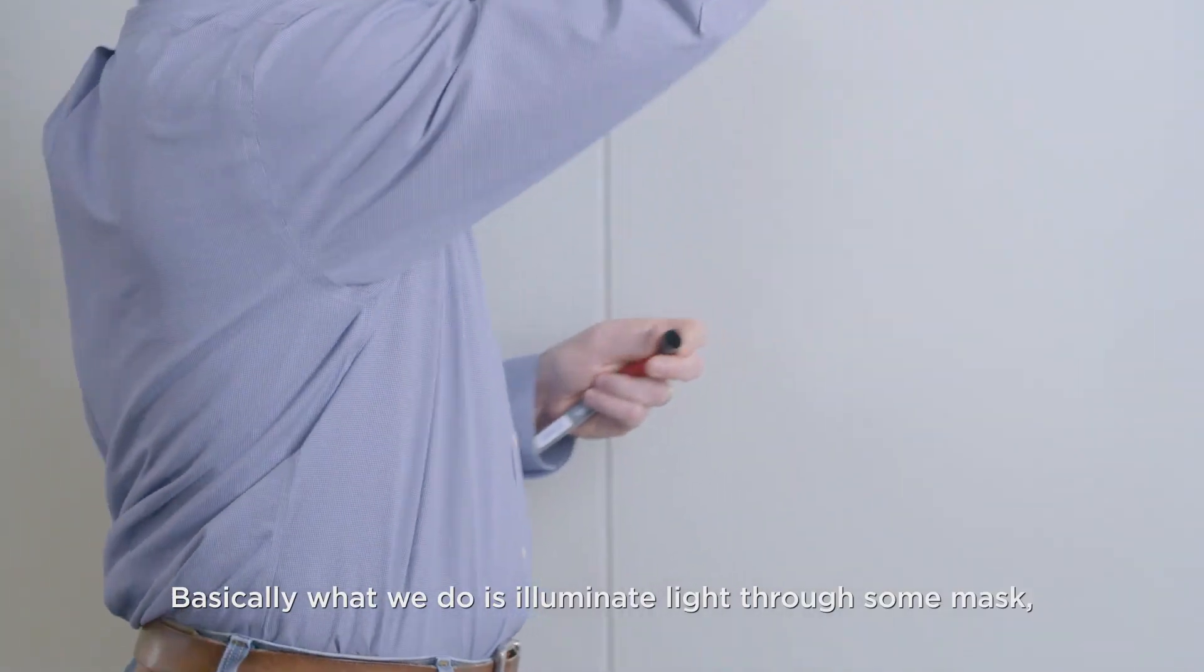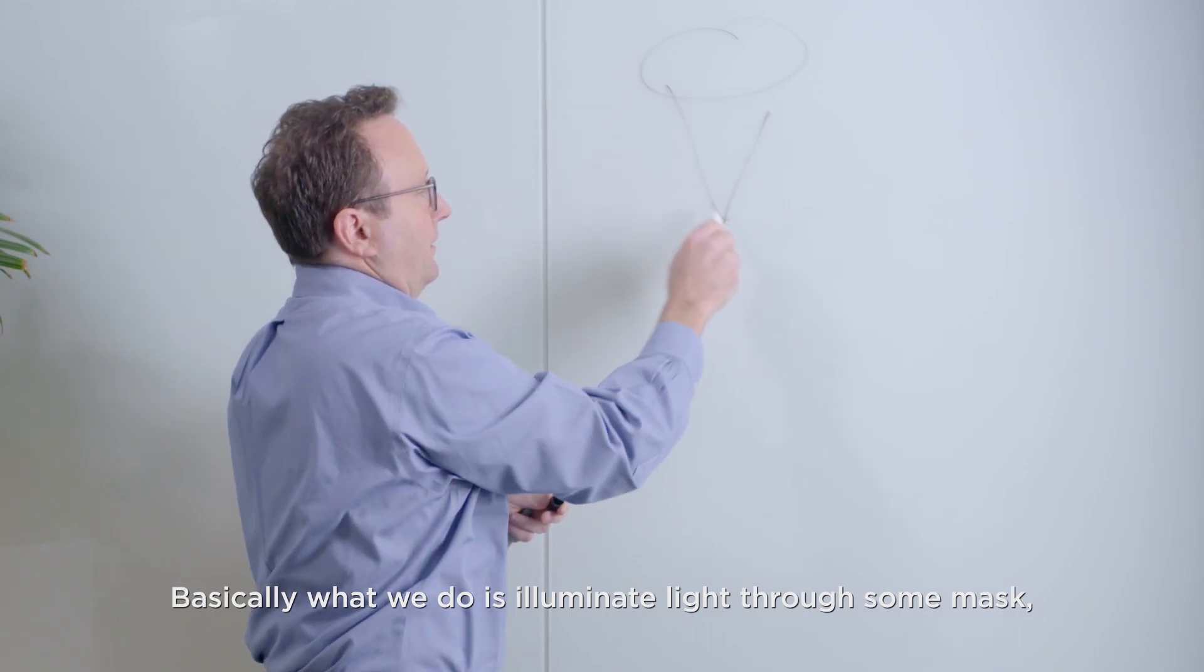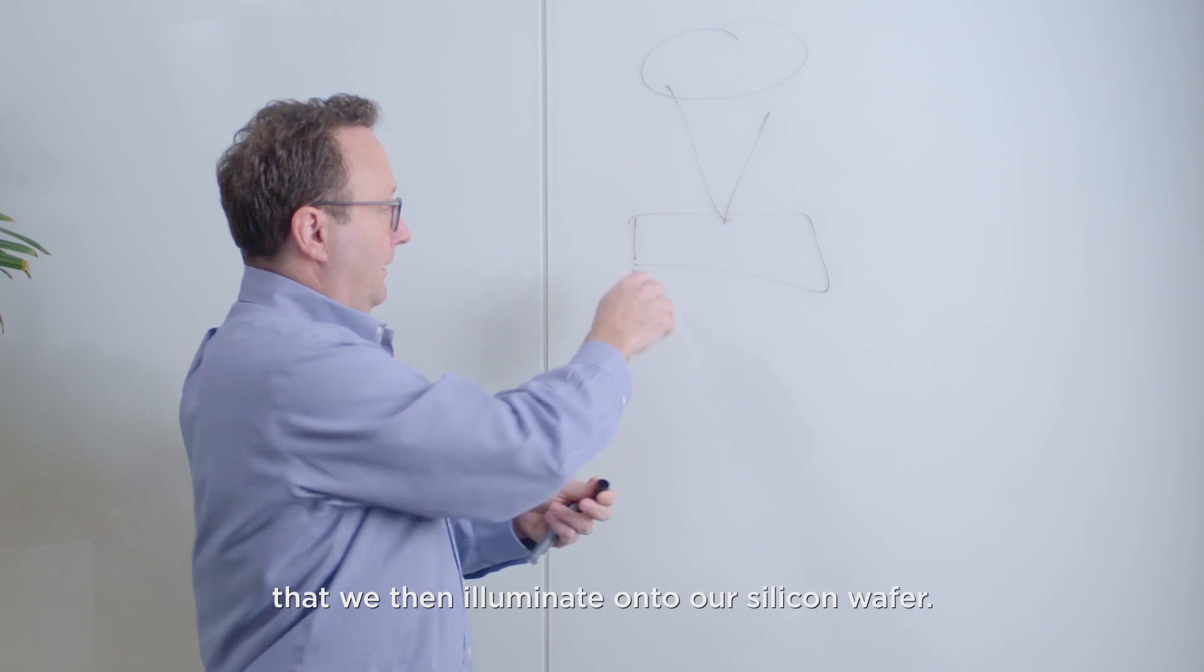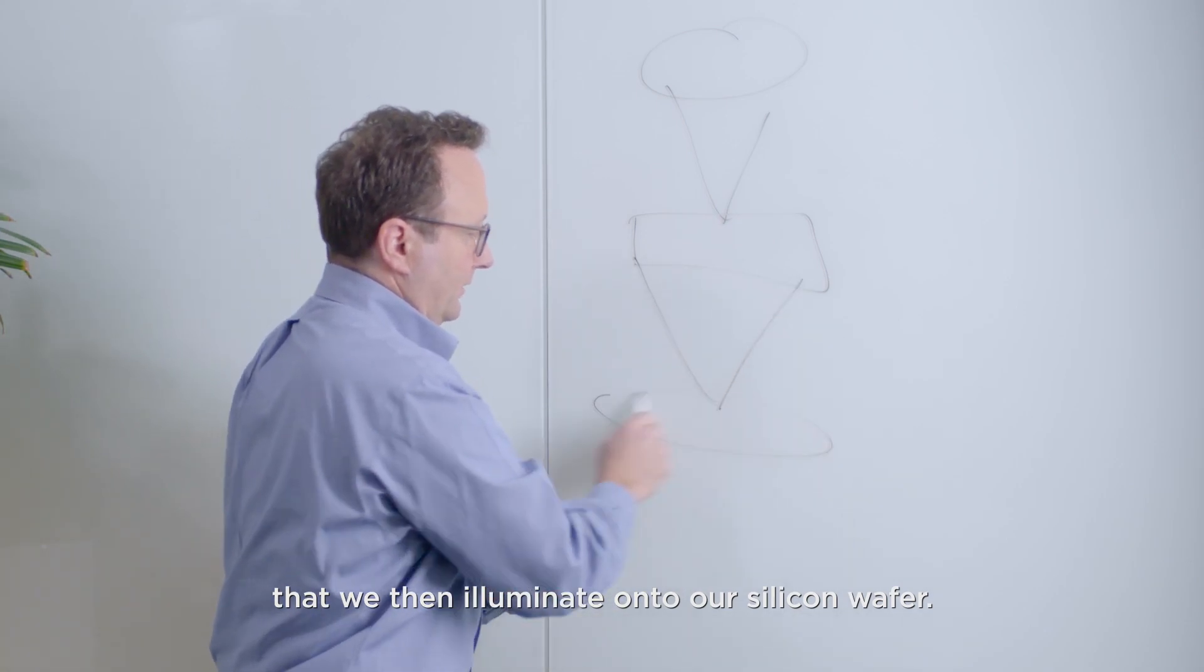Now our scanners at ASML make these patterns. Basically what we do is illuminate light through some mask, which leads us to a glass plate with chrome, that we then illuminate onto our silicon wafer.